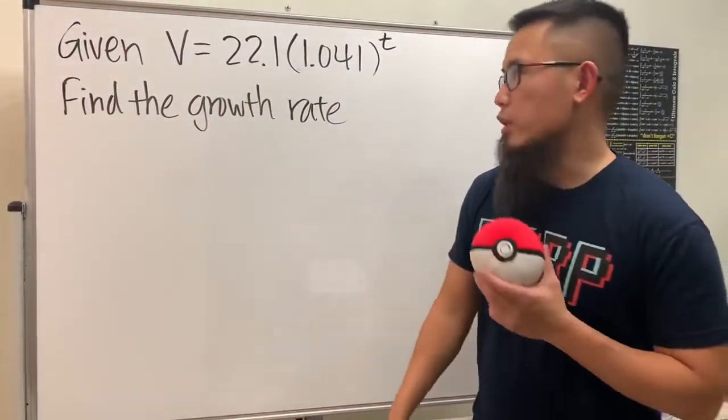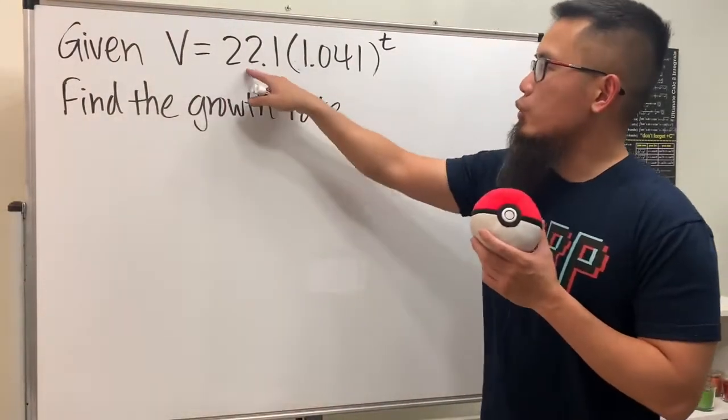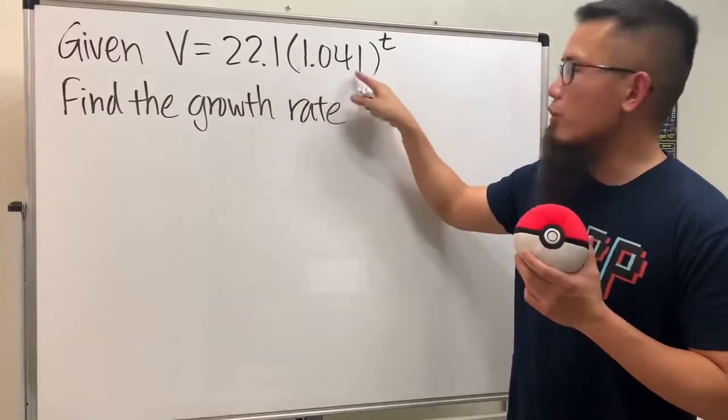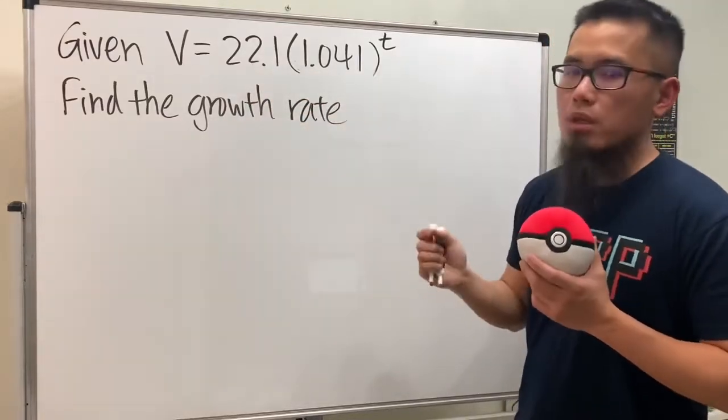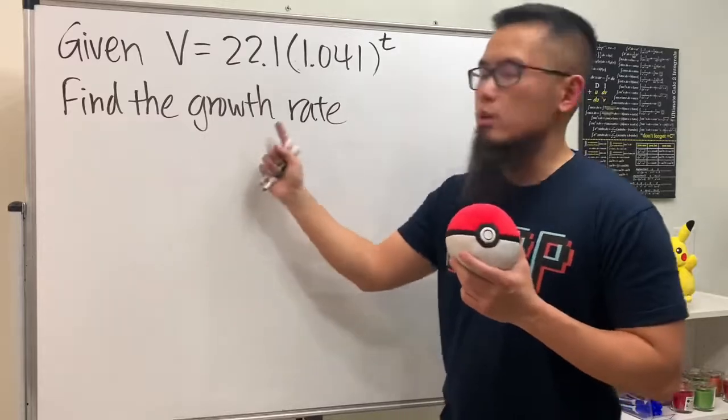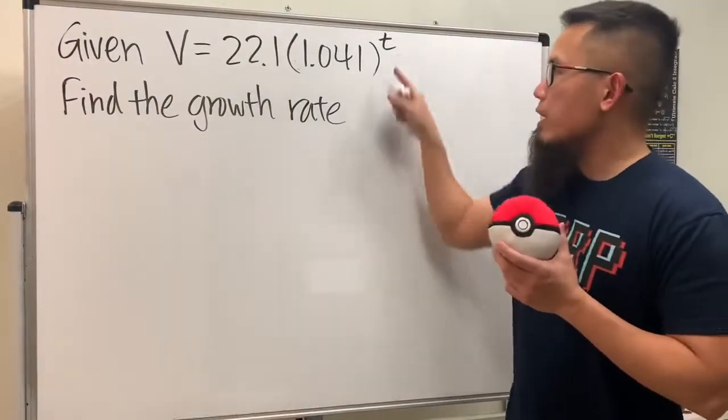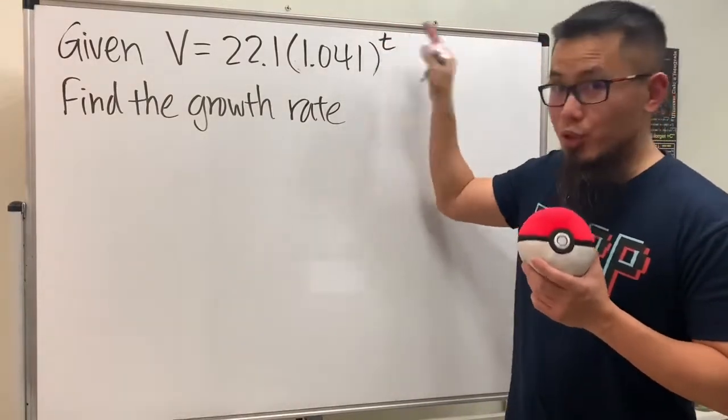For this question, we are given an exponential function V = 22.1 times 1.041 raised to the t power, and we are going to find the growth rate. Notice that we have just the t